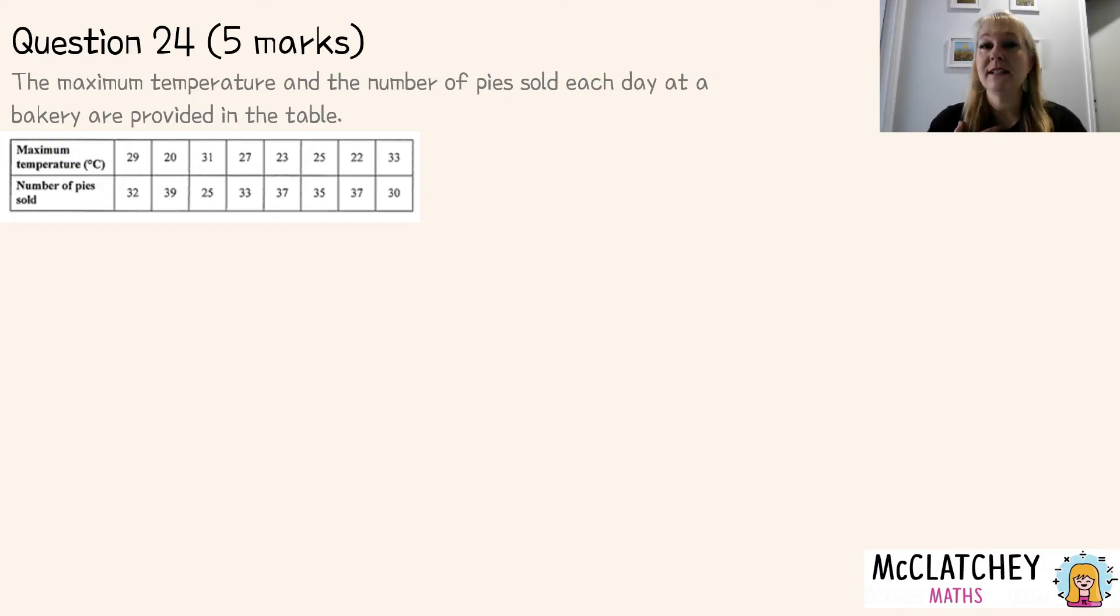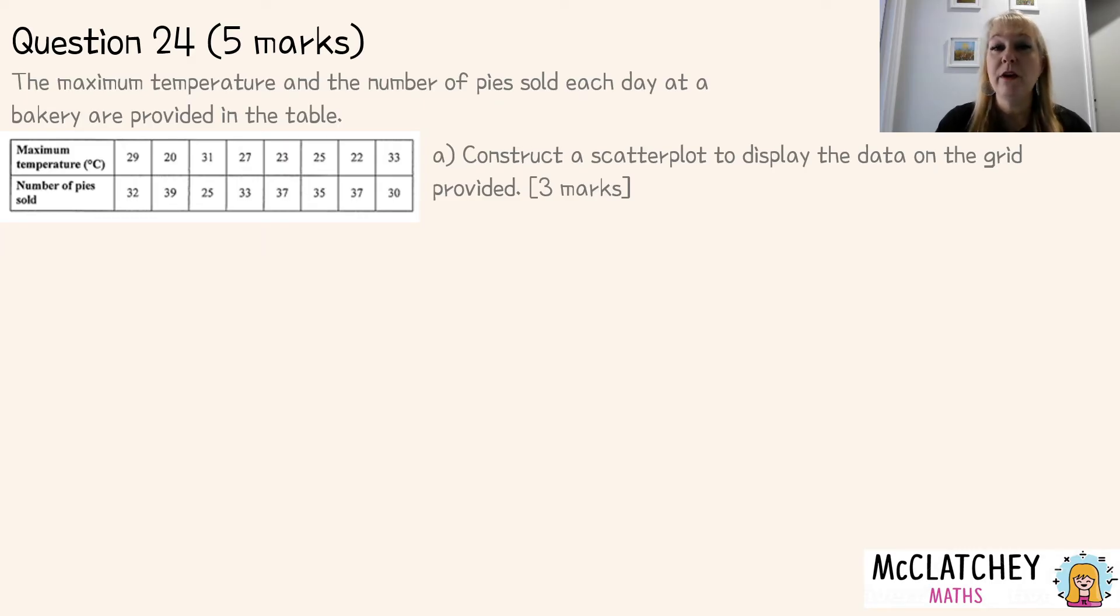Okay. Wow. I didn't realize there was a third question here. I should have known I prepared this before. But here we go. We've got question 24. They really went to town at the QCAA with bivariate data in this short answer paper. We've got a five marker here. The maximum temperature and the number of pies sold each day at a bakery are provided in the table. We need to construct a scatter plot to display the data on the grid provided. And it's worth three marks for our graph. So we want to do a good graph here. Graphing is not difficult, but there's lots of little things that people forget.